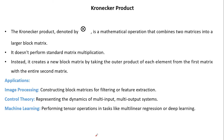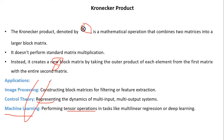The next important concept in image transforms is the Kronecker product, denoted by ⊗. It is a mathematical operation that combines two matrices into a large block matrix. It does not perform standard matrix multiplication; instead, it creates a new block matrix by taking the outer product of each element from the first matrix with the entire second matrix. Applications: in image processing for constructing block matrices for filtering or feature extraction; in control theory for representing dynamics of multi-input multi-output systems; and in machine learning for tensor operations like multi-linear regression or deep learning.